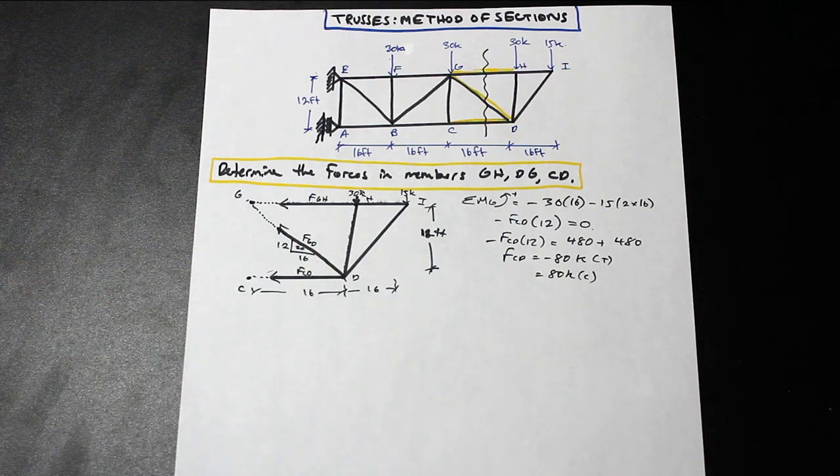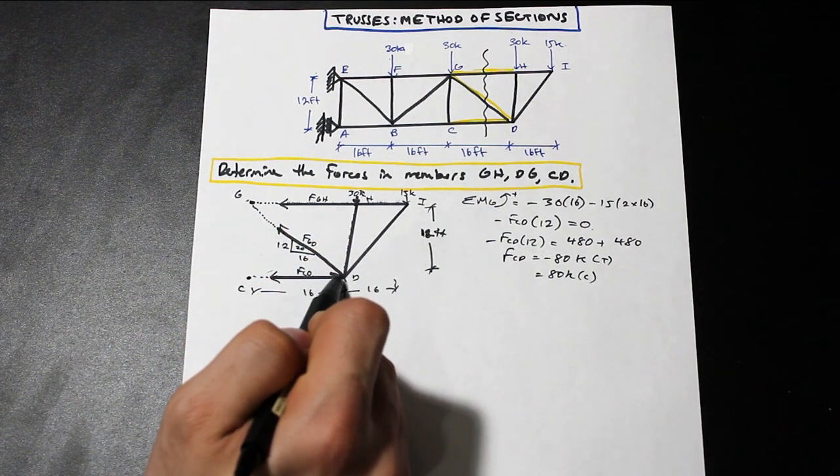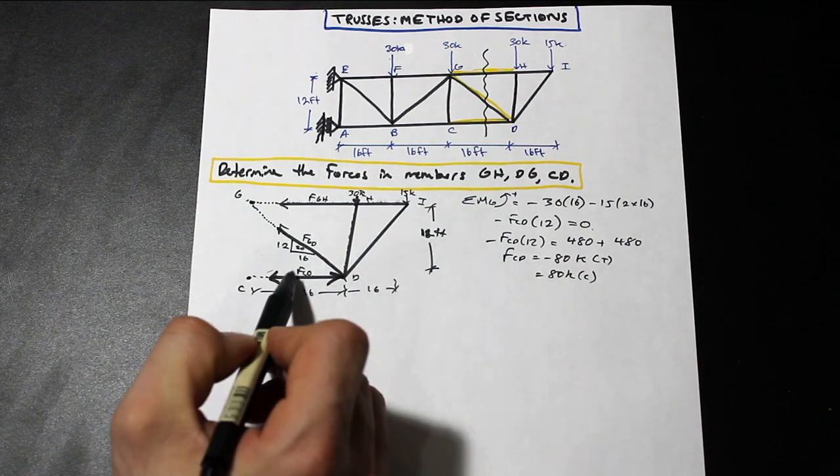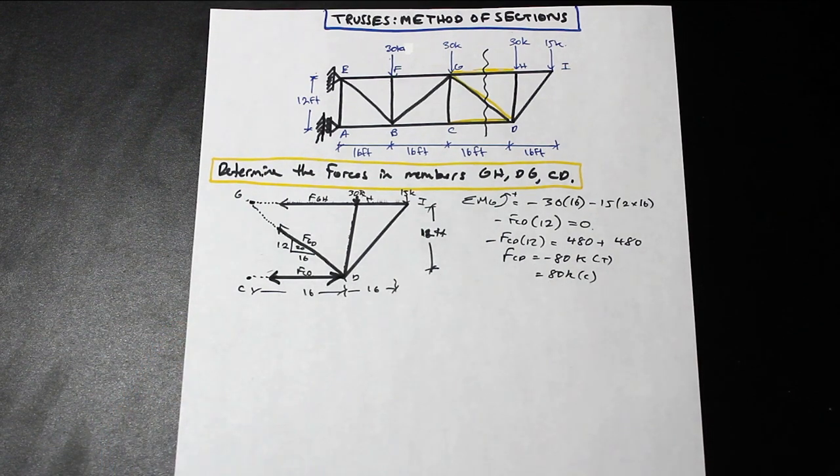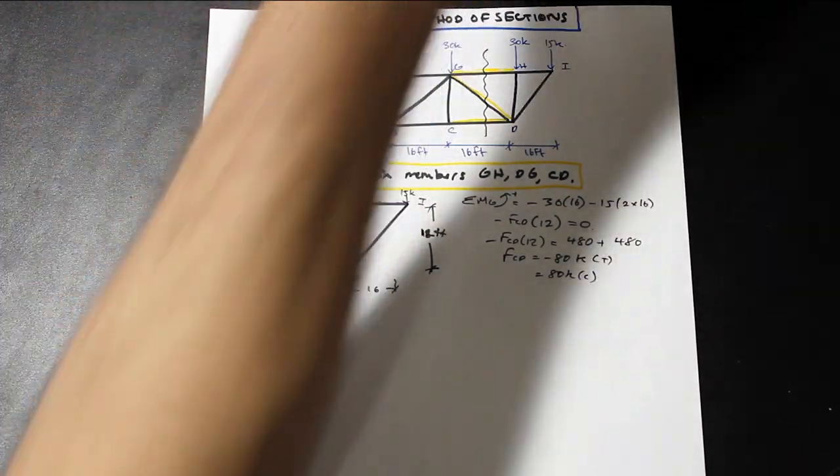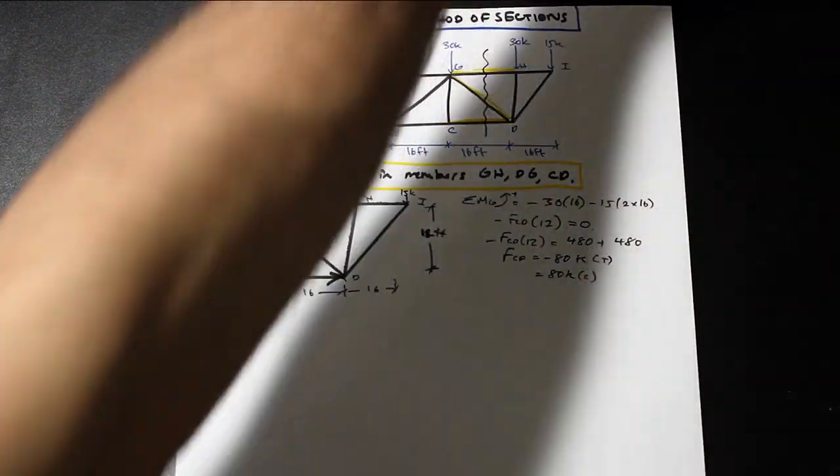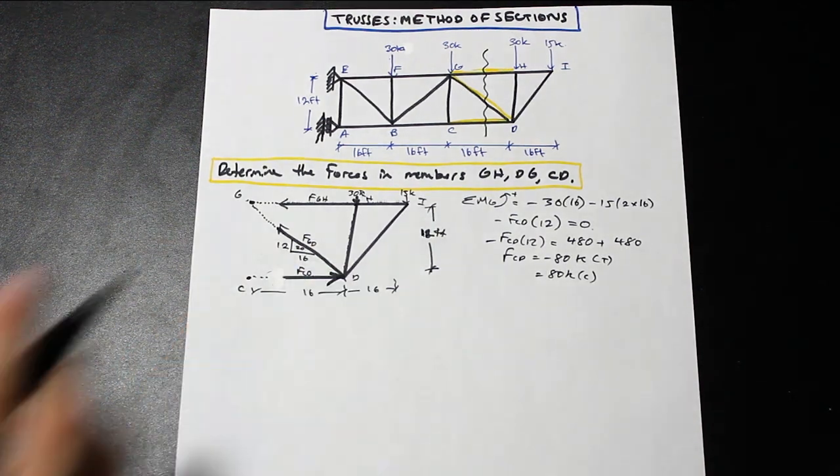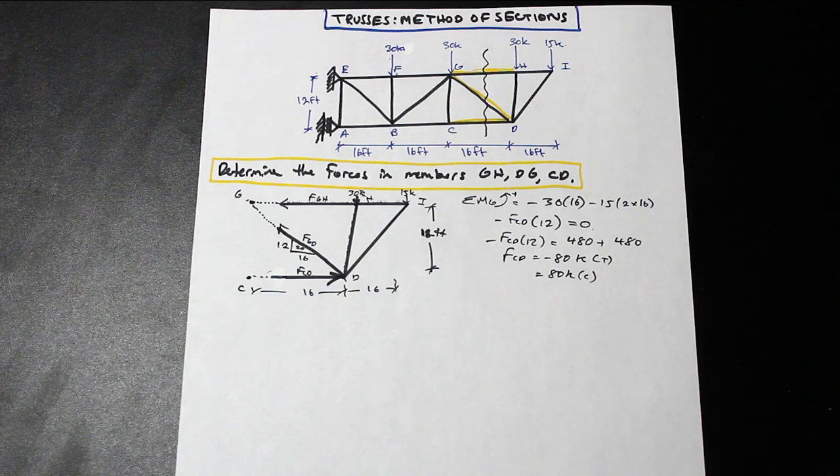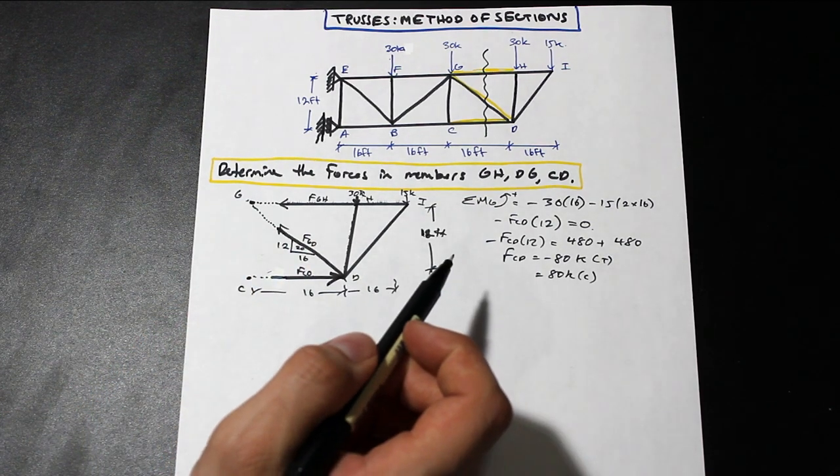You can either revise your direction and continue with the correct direction, so now the arrow is going to be pointing inwards, denoting compression. Or you can keep the direction this way, but every time you use FCD, you just use a negative value. So those are two options. I like to revise it, so I'll just get my white out, and I'll just take my arrow away here. So now, I know now that the direction of FCD is correct, so I can use this direction now and not have to worry about including a negative.